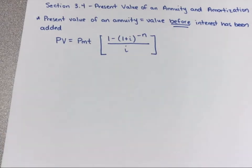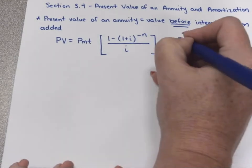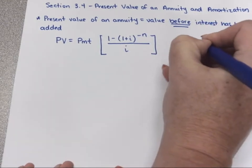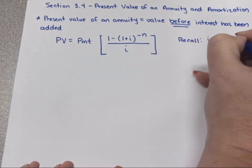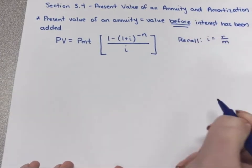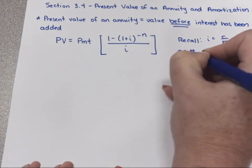The top is kind of shifted compared to the future value formula. The future value had the parenthesis term first, but the biggest difference is that we have a negative exponent instead of a positive one. Just as a reminder, i is going to be the rate over m, and n equals the number of payments.